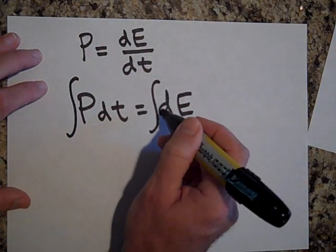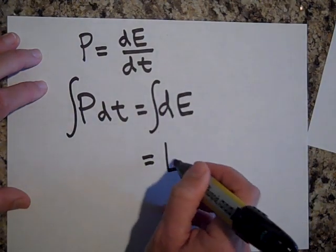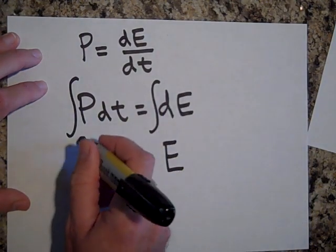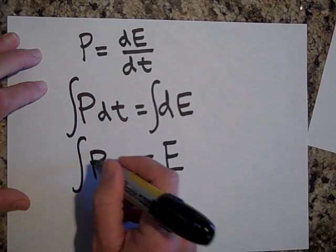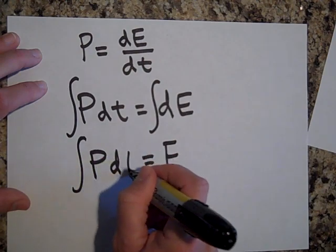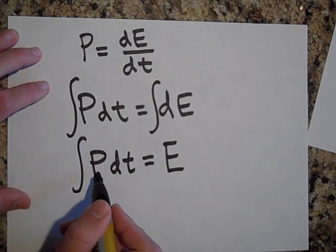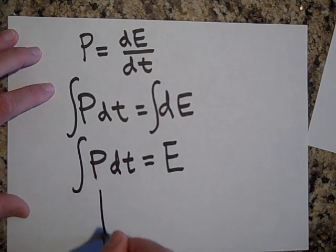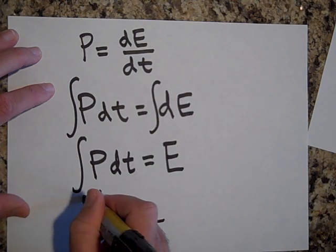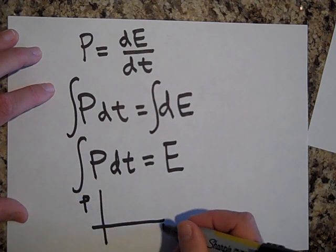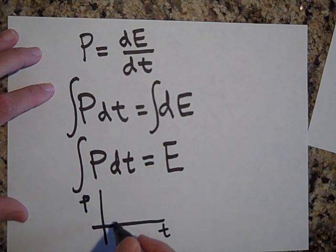dE, and that's equal to the integral of the power times dt, the integral of P with respect to time. This is the area underneath the P versus t graph. So if I have a P versus t graph, that's what that integral gives me is it gives me the area underneath the graph.